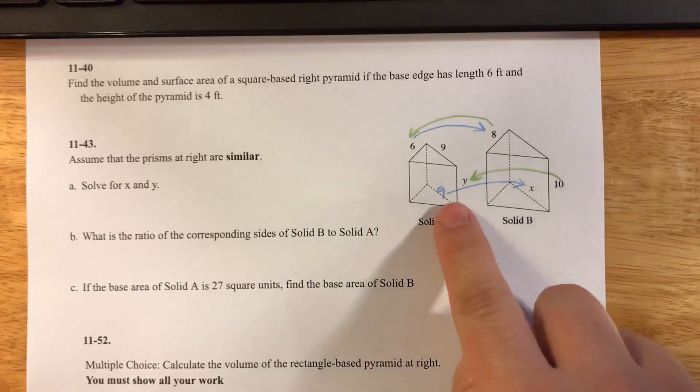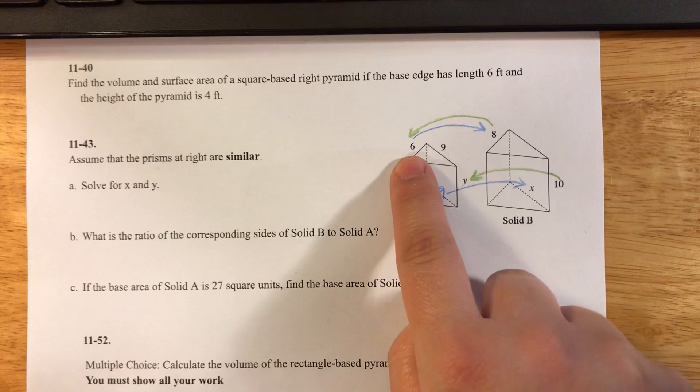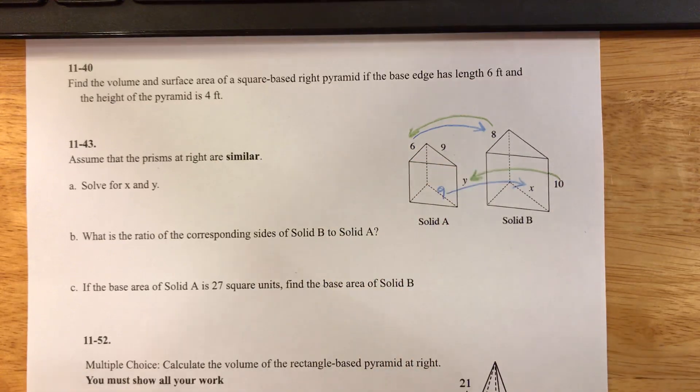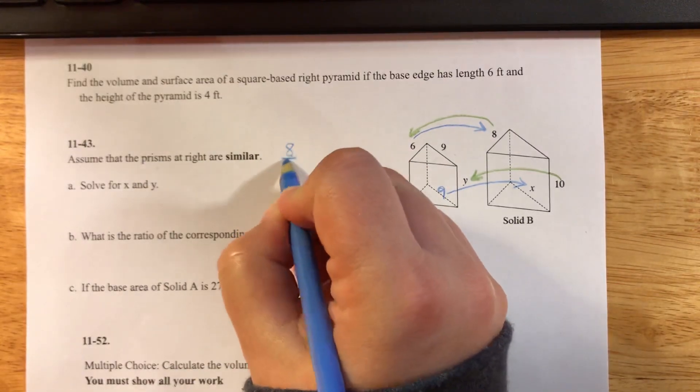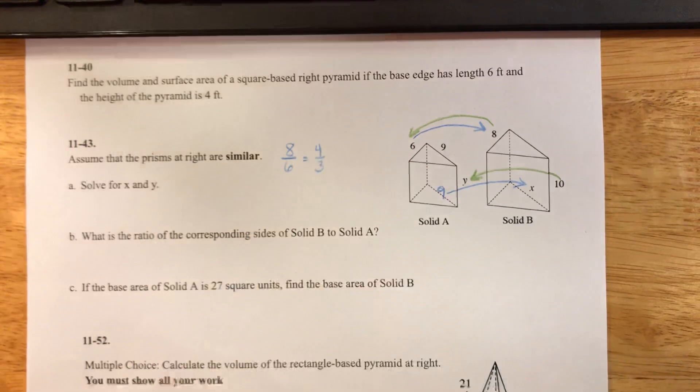I want to start by figuring out what x is, so I'm gonna figure out what do I multiply 6 by to get 8. To figure that out, I am going to do 8 divided by 6. And if I reduce that down, I get 4 thirds.